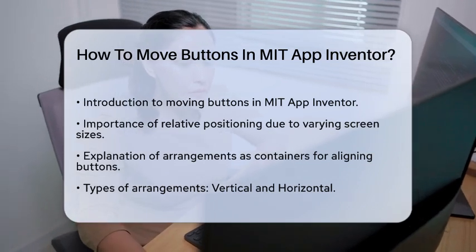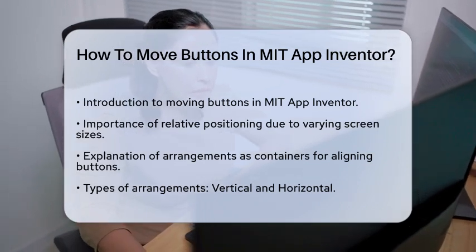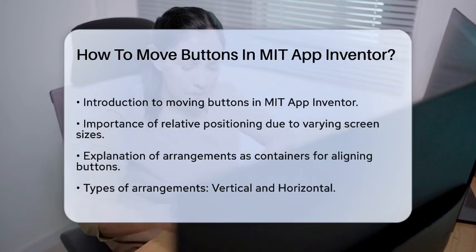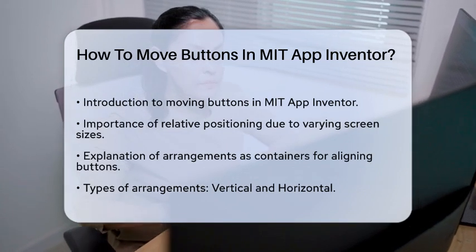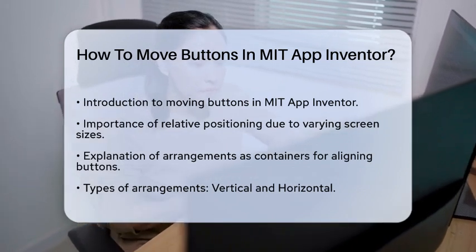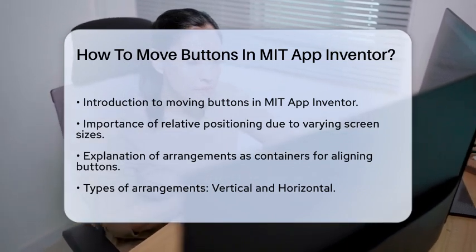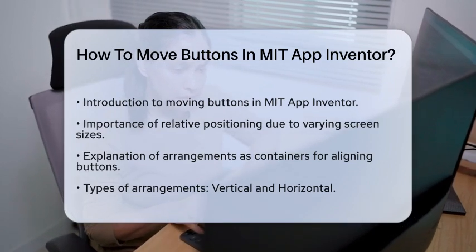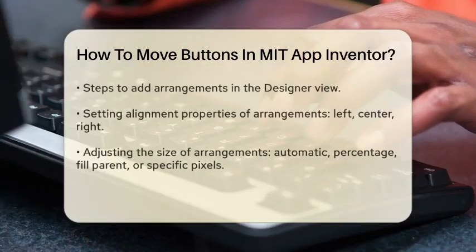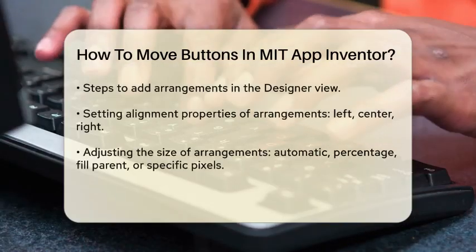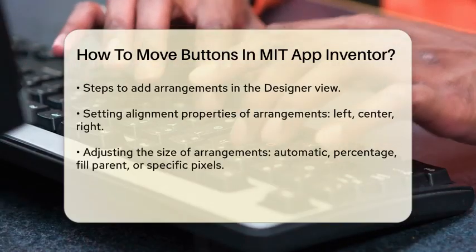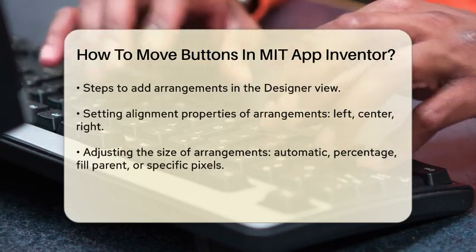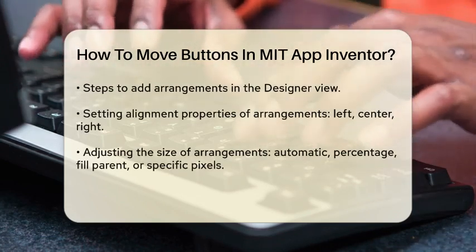To place buttons precisely, you need to use arrangements. These are like containers that help you align your buttons correctly on the screen. You can use vertical and horizontal arrangements to line up your buttons, labels, and other components.